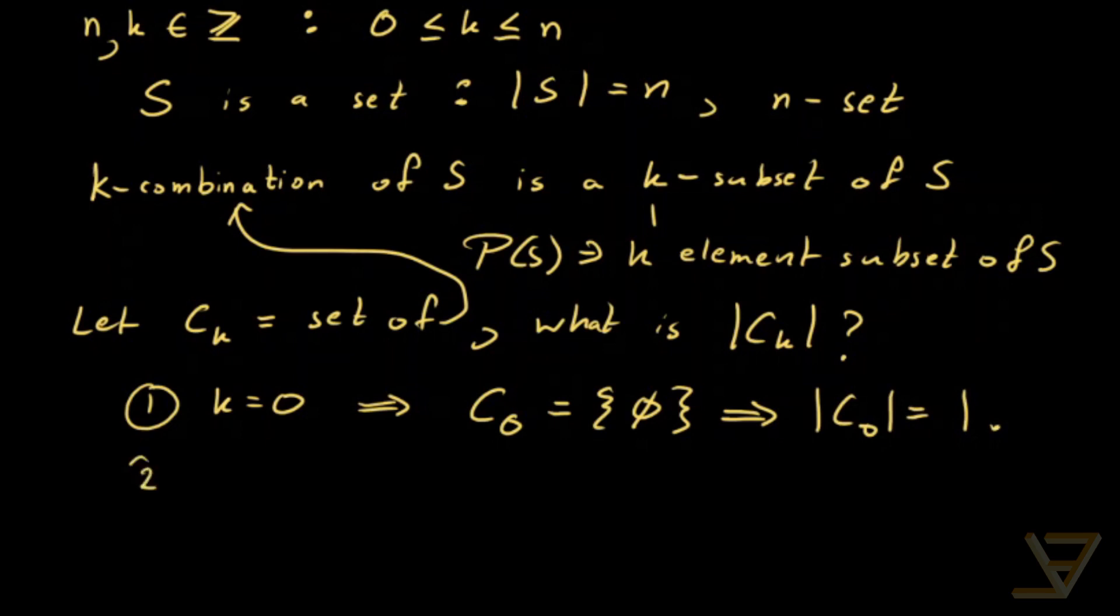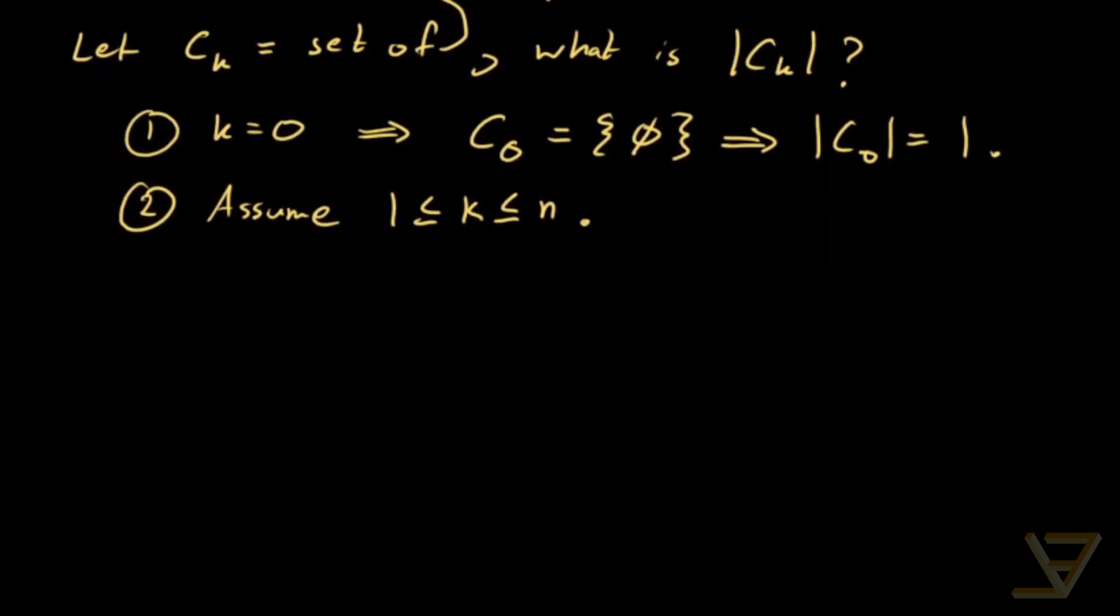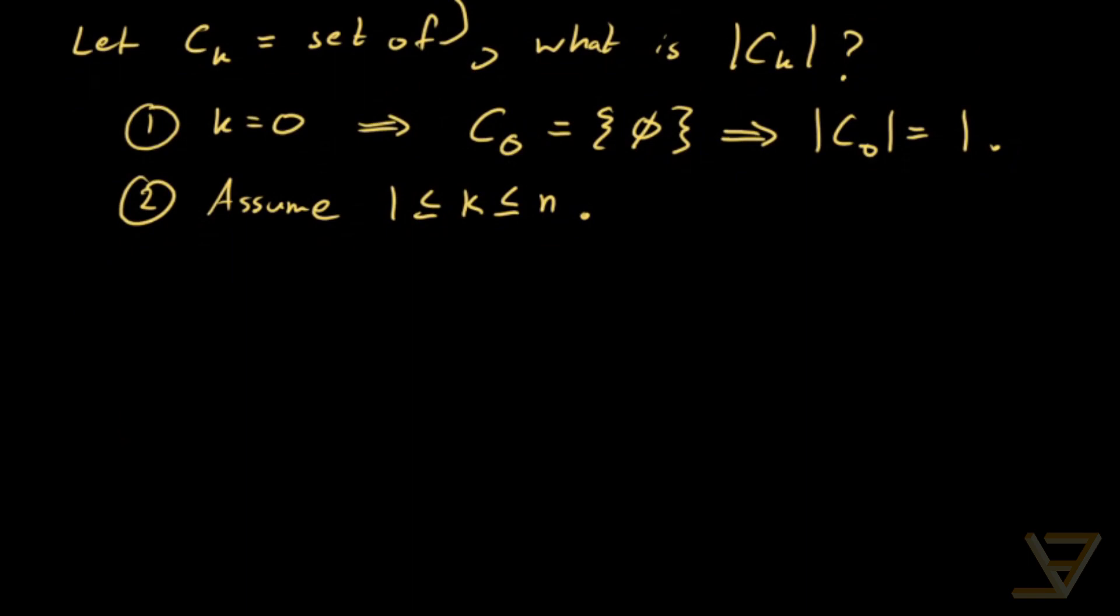So now we can assume that k is greater than or equal to one, and as before, less than or equal to n. This should make things a bit easier because we've gotten rid of an edge case. But beyond that, we might not have any ideas. So we do what we often do in math: we try to relate this to a different problem.